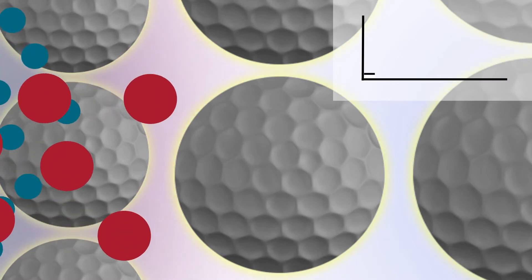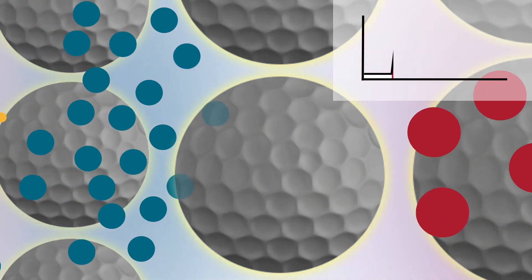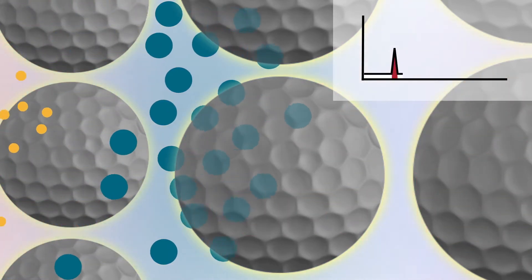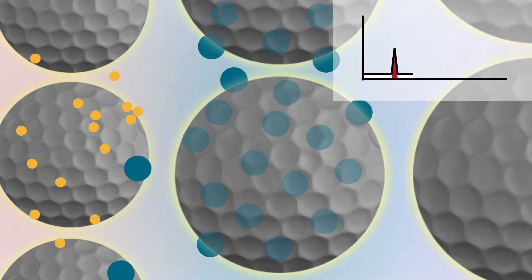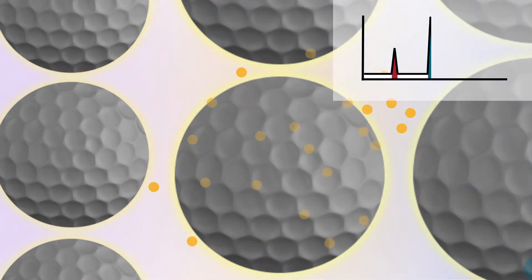Large proteins, like antibody aggregates, are sterically excluded from most pores, so they quickly flow through the column. Midsize proteins spend more time diffusing into the pores and elute later from the column.